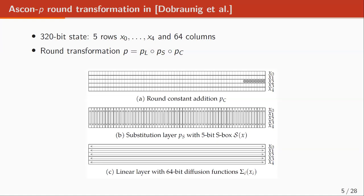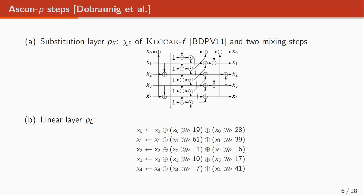ASCON-P operates on a 320-bit state with five rows and 64 columns. It has three steps: a round constant addition, a substitution layer that works on five-bit columns, and a linear layer that works on 64-bit rows. In particular, for the substitution layer, it uses the S-box of Keccak-f step, and two mixing steps before and after that have three-bitwise additions. Those mixing steps are there due to the low diffusion of the S-box layer.